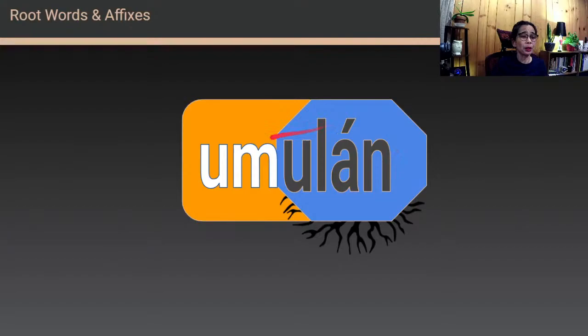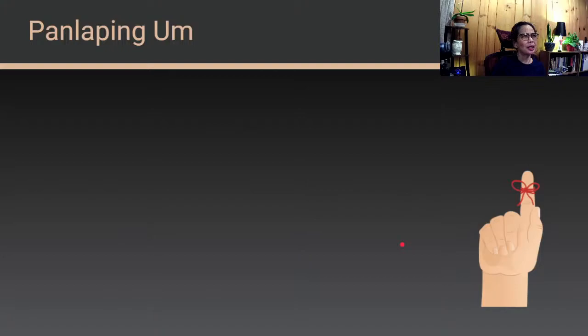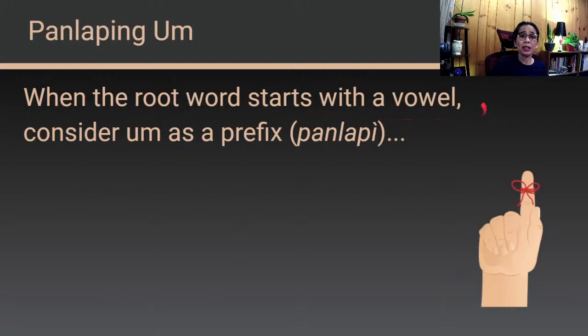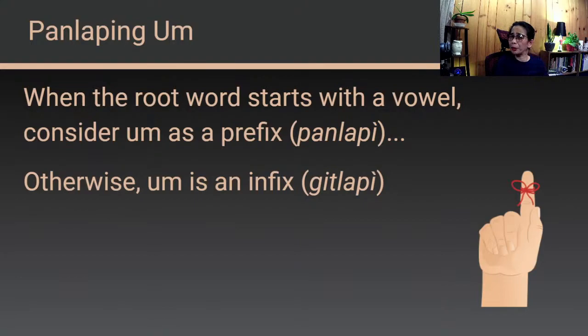Based on the animation, umulan is the resulting word — you have the affix um and the root word ulan, giving you umulan. Umulan is an infinitive form of a verb in Tagalog. Key thought on prefix um: when the root word starts with a vowel, consider um as a prefix. Otherwise, um is an infix, and the resulting word is a verb.